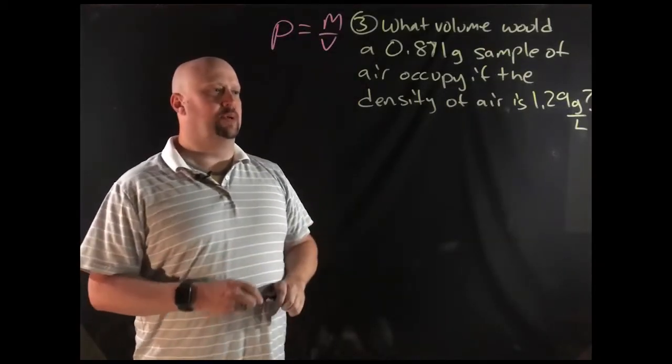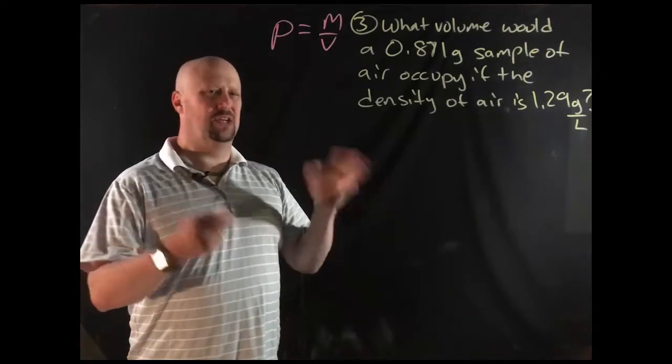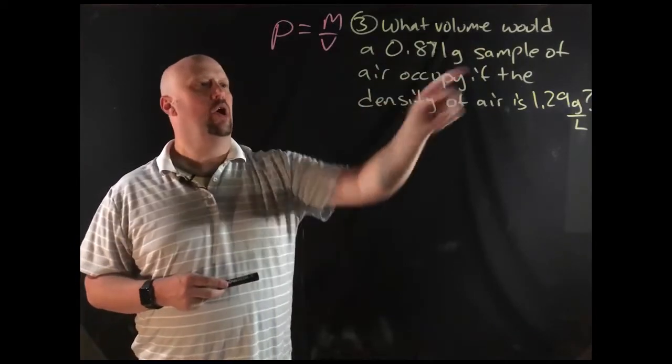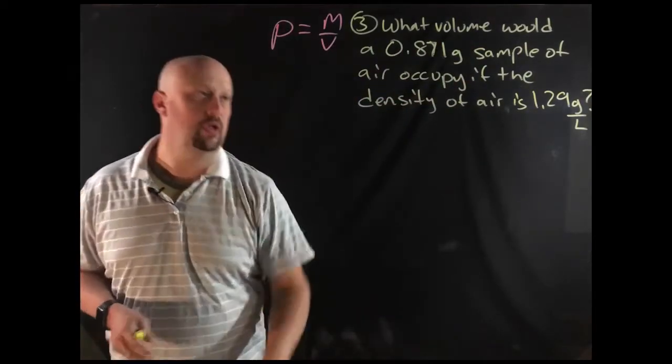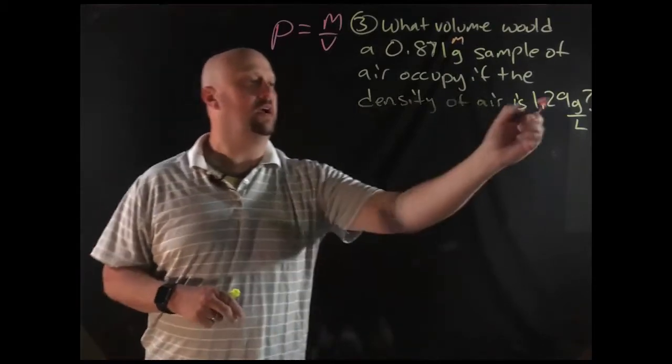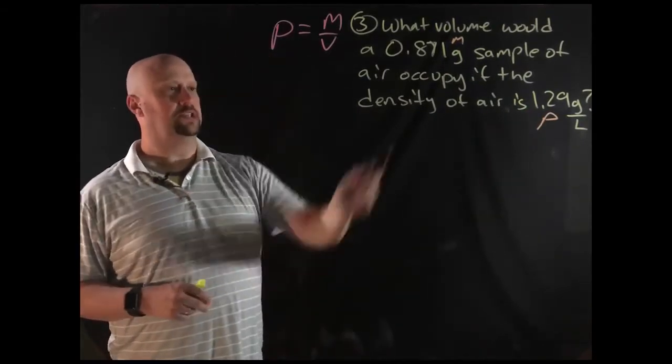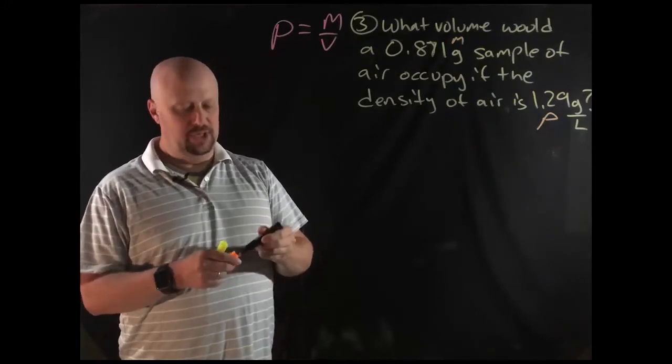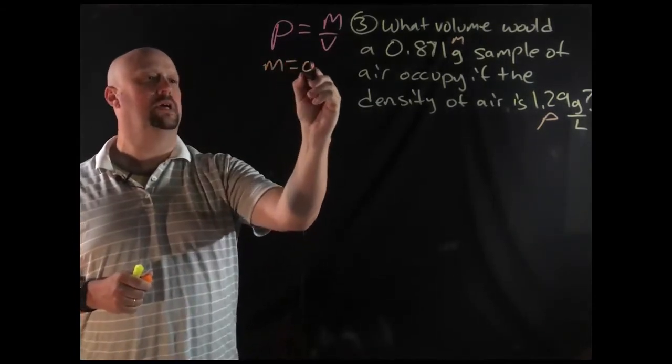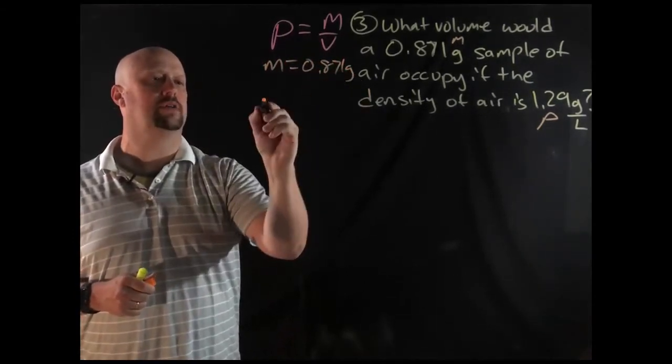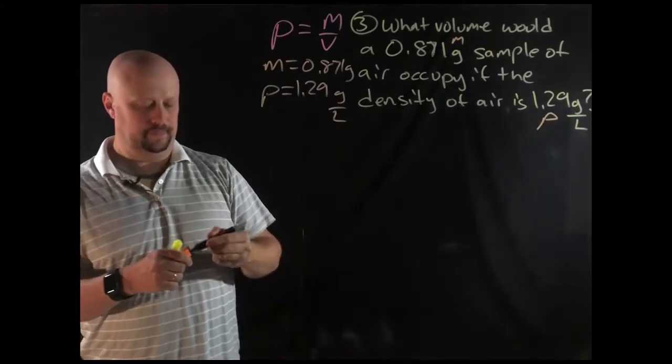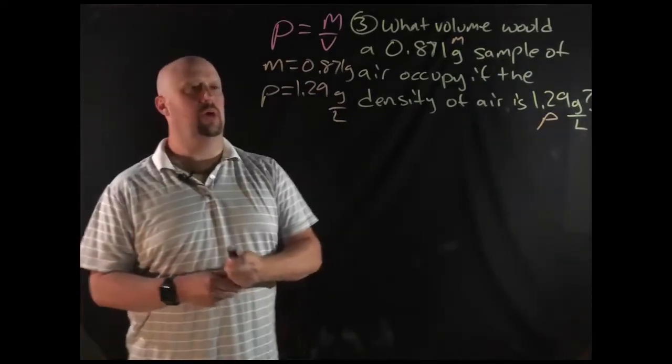Okay, so last problem. A little bit different algebra in this one. I want to make sure you see the algebra because sometimes students get a little tangled up in trying to figure out the volume part of it. So what volume would occupy? So I'm looking for volume. Would a 0.871 gram sample, and I'm just going to stop right there. That's my mass, right? Of air occupy if the density of air is 1.29 grams per liter. So that's mass, that's density, okay? And so in this case, let's get going. Again, I'm going to go ahead and write out what each thing is. So my mass is 0.871 grams. My density, 1.29 grams per liter.